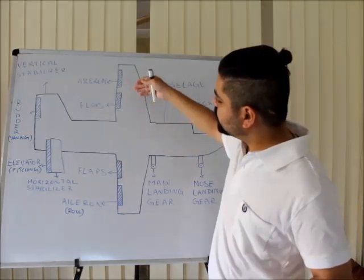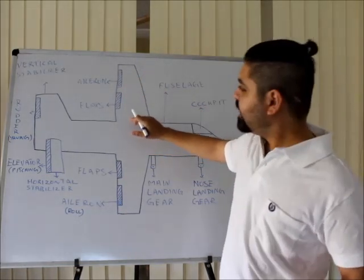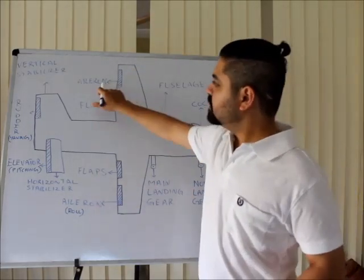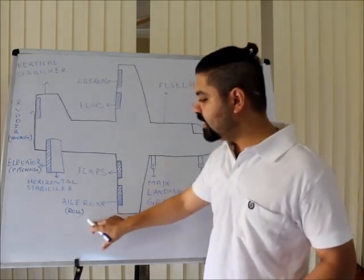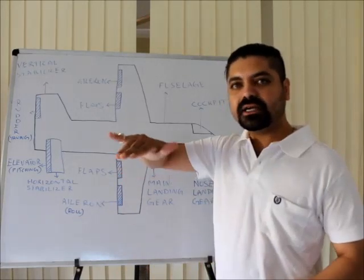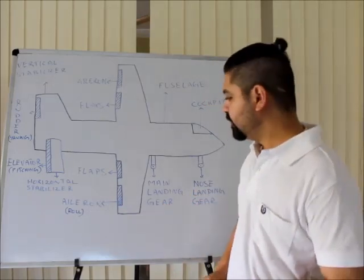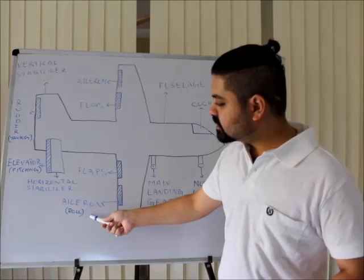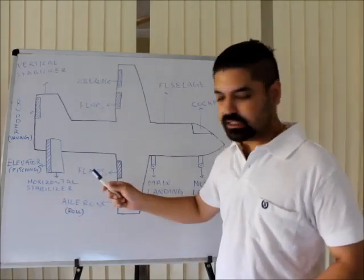The part away from the fuselage is called the aileron. Flaps are the ones closer to the fuselage, and ailerons are the ones away from the fuselage. Ailerons are used for the rolling moment of the aircraft — the turning movement you see when an aircraft banks is called the rolling moment, and it is generated by the ailerons.